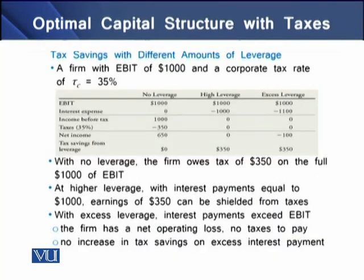Let's see tax savings with different amounts of leverage. Assume a firm with earnings before interest and tax of one thousand dollars and a corporate tax rate of 35%. We have three scenarios: one with no leverage, one with a high level of leverage, and one with excessive leverage. EBIT is one thousand dollars for all three scenarios.